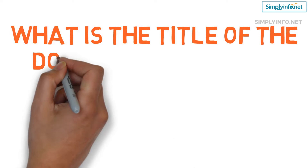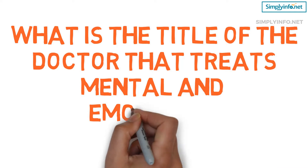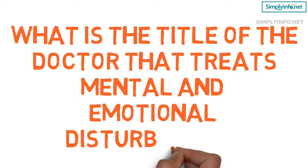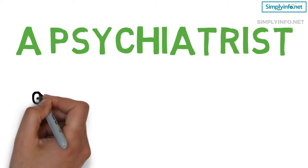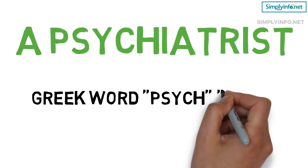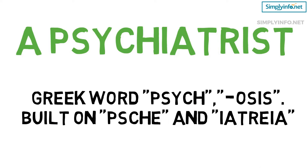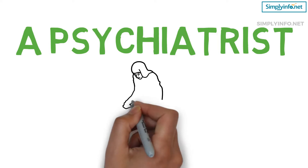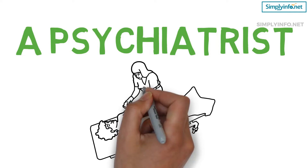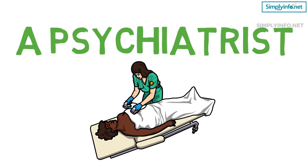What is the title of the doctor that treats mental and emotional disturbances? A psychiatrist. A full-blown mental disorder is called psychosis, a word built on the Greek word 'psych', which means spirit, soul, or mind, and 'osis' built on 'iateria', which means medical healing. A psychiatrist by etymology is a mind healer.